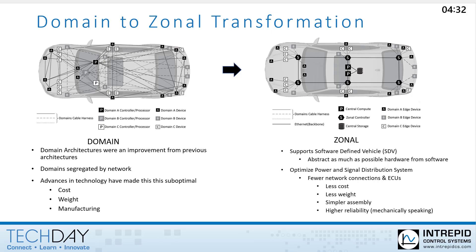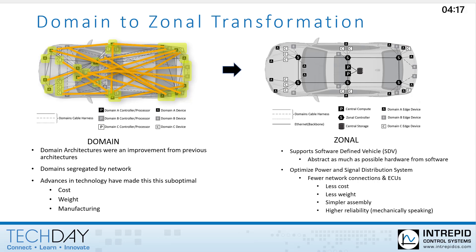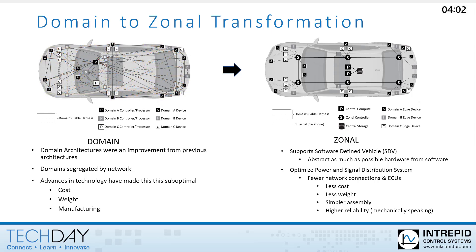Domain architectures have served the industry well. However, with the continuous growth of the number of electronic features, the number of ECUs and the networks along with the associated wiring also grew to the point where this has become a major contributor to the cost and weight of the vehicle. This is because many domains span the entire vehicle, and therefore so do the wiring, ECU, and electrical system. Wiring for the different domains, such as HVAC, lighting, and body, overlap each other, leading to very costly and heavy wiring harnesses.